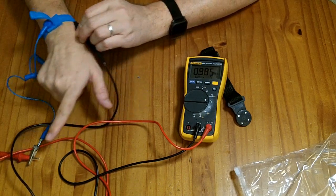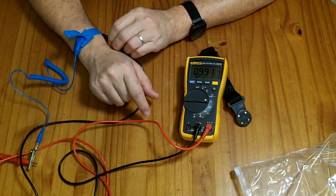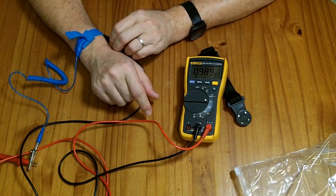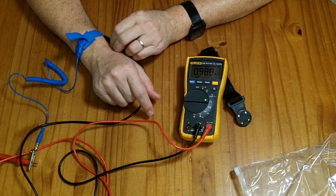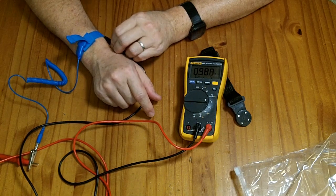It's definitely conducting to the alligator clip there. Now it's mega ohm resistance but for electrostatic discharge, you're not trying to move a lot of current, you're just lowering the voltage.